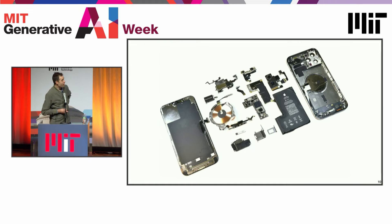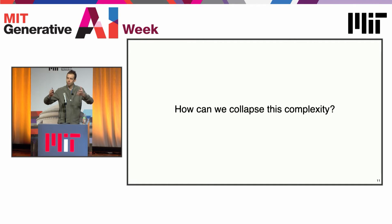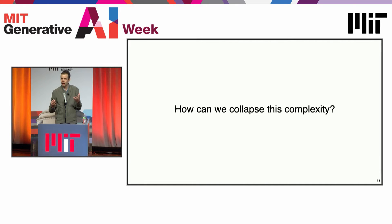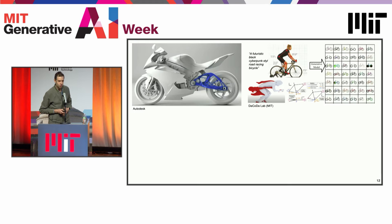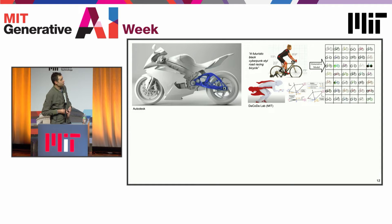So my main point, which I'll try to articulate with examples, is: how can we think about beginning to collapse this complexity? How can we continue to advance manufacturing forward and enable the designs of the products of the future, but do it in a way that deals with this complexity challenge? And we see many emerging tools — first, tools for the front-end for design.